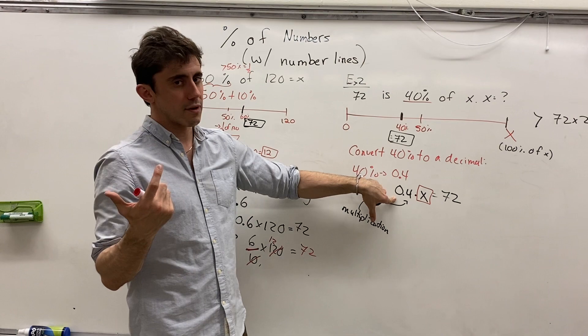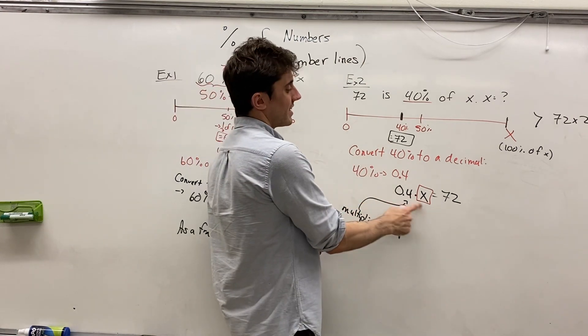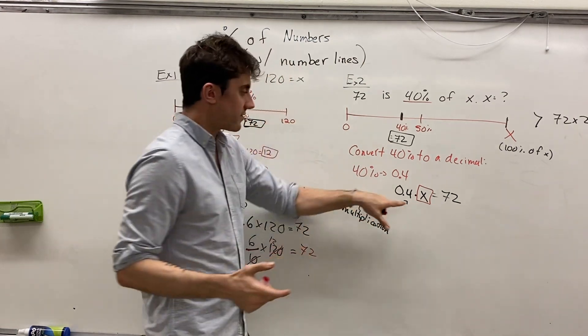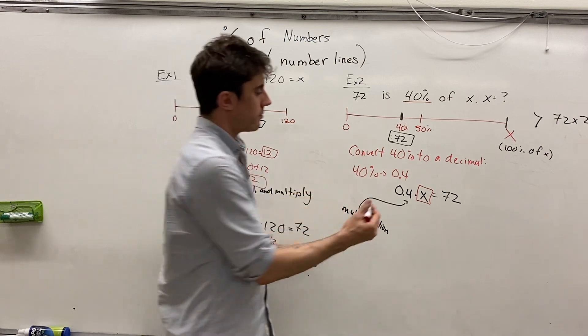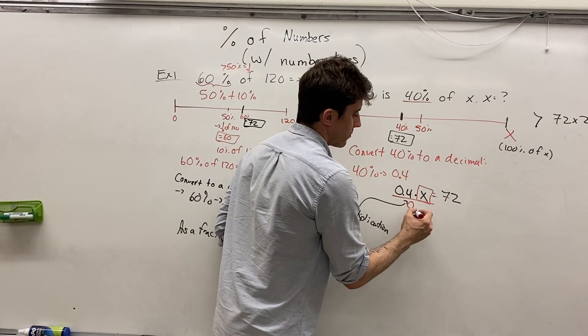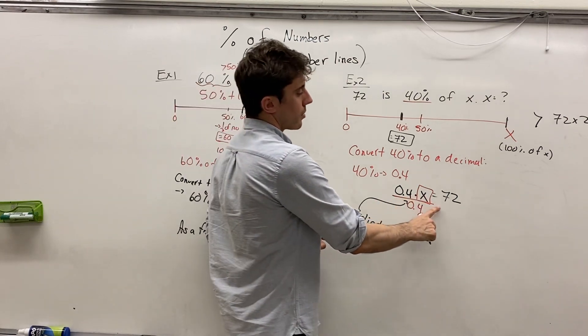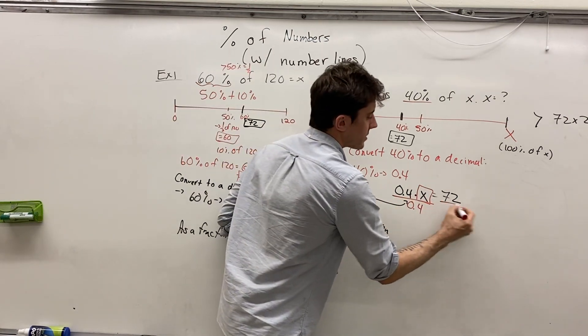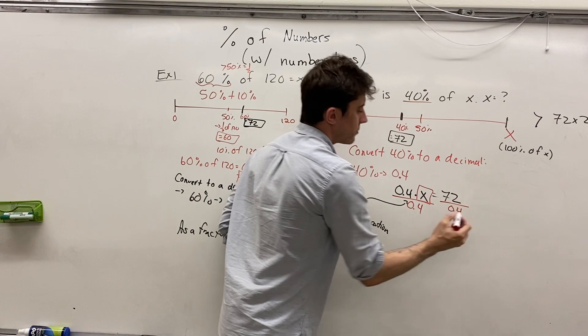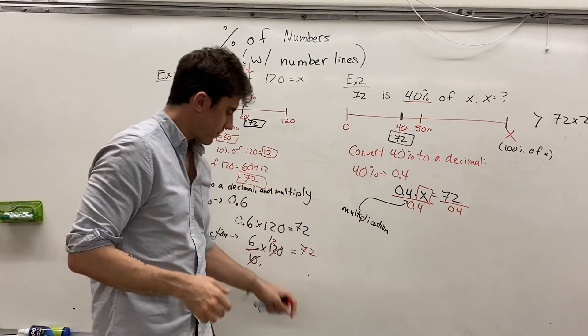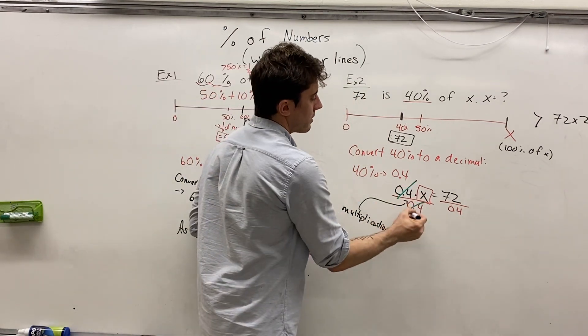To get rid of an operation using algebra, we always think of the inverse operation. So what's the inverse of multiplying by 0.4? Well, clearly that's dividing by 0.4. And algebra always means we do the same thing on both sides of the equal sign. And so we divide also 72 by 0.4.